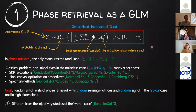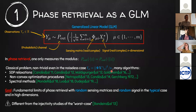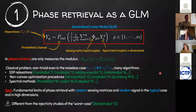The most generic way to state the phase retrieval problem is to say that the measurements should only depend on the modulus — or the absolute value in the real case — of this matrix-vector product. Even in the noiseless case, where y_mu directly equals the modulus squared, this problem is highly non-trivial. Many algorithms have been developed from very different points of view: semidefinite programming, spectral methods, non-convex optimization, etc.